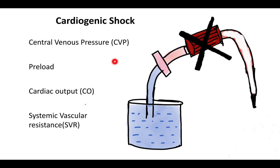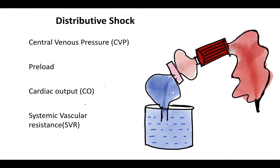In cardiogenic shock, the left ventricle is not functioning. There is effectively an obstruction at the heart itself, so CVP is high. Since the heart is not pumping, blood accumulates — preload is high. Cardiac output is obviously low. SVR is high due to sympathetic stimulation and vasoconstriction.